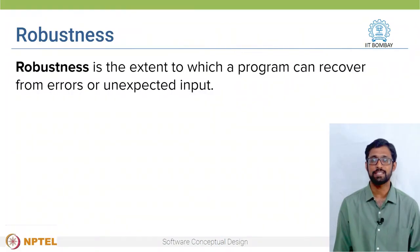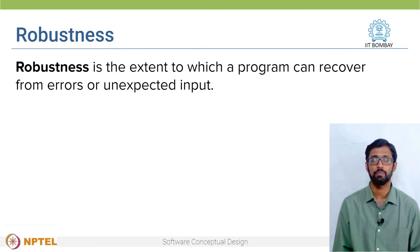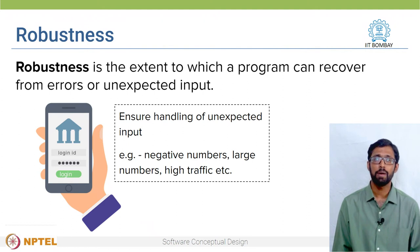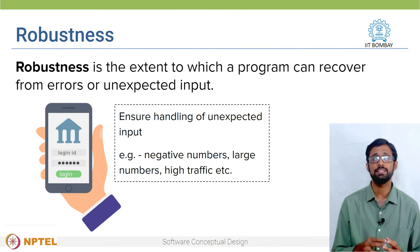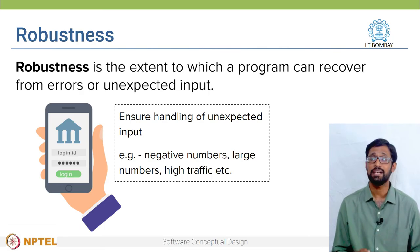I also want the service to handle unexpected situations reasonably well. For example, if the main chef falls sick, is there a replacement? Is there any other option to serve the customers? So this is similar to the quality attribute of being robust even in unexpected situations. Robustness is the extent to which a program can recover from errors or unexpected input. For example, in a mobile wallet system like Amazon Pay, we have to ensure that the service handles unexpected input like negative numbers, large numbers, and high traffic as well.